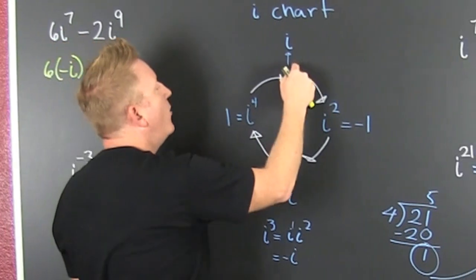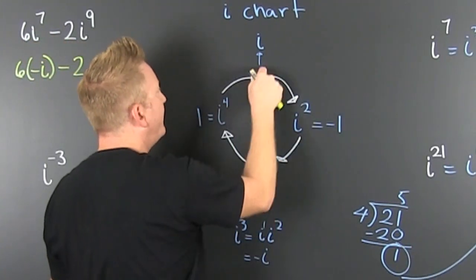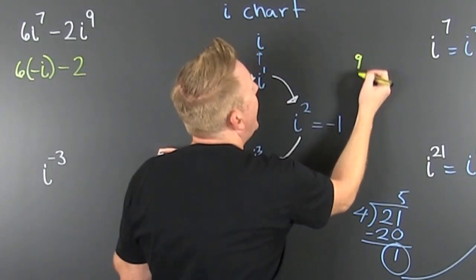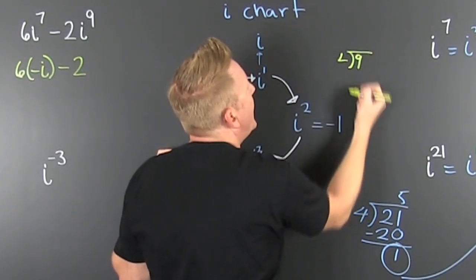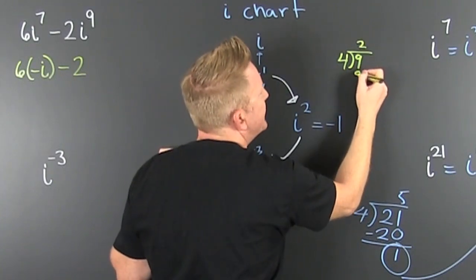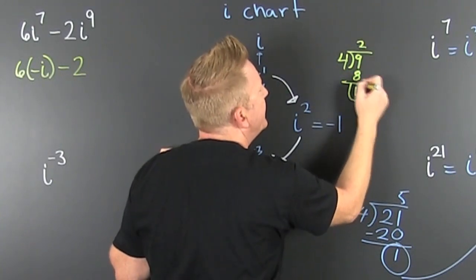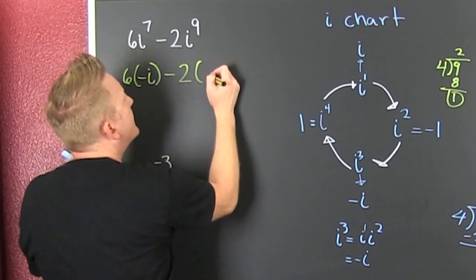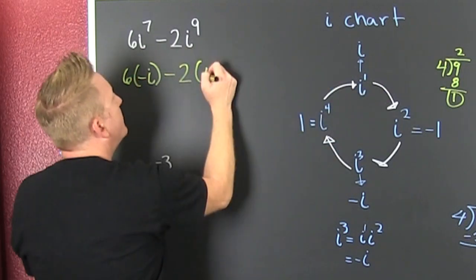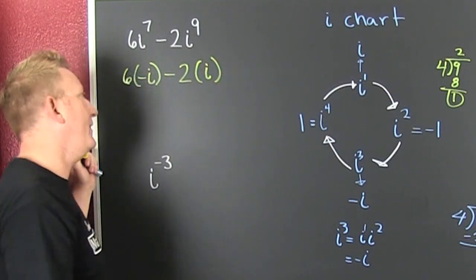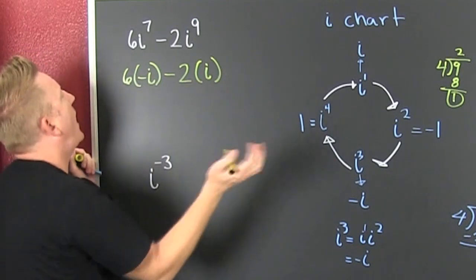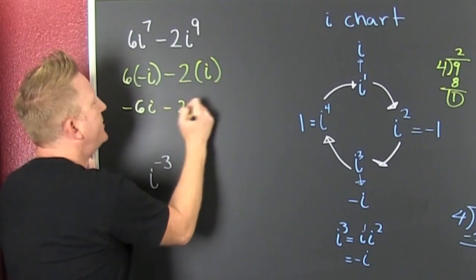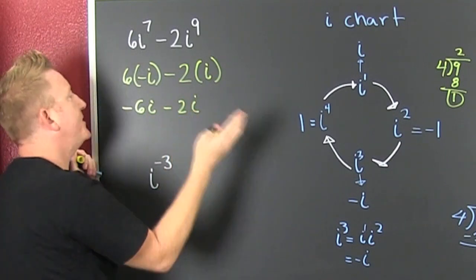What's i to the ninth? I could count — one, two, three, four, five, six, seven, eight, nine — or I could take that nine and look for the remainder when I divide it by four. That's eight with a remainder of one. So the remainder is one — that's the new power. So i to the first is i. That's minus six i, so I subtract off two i, and then I've got... two i's.